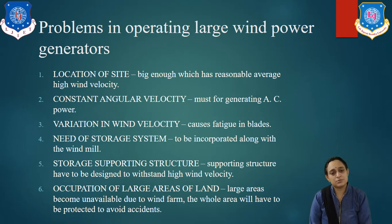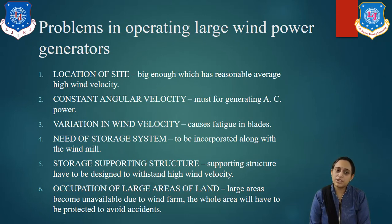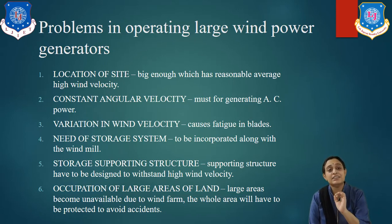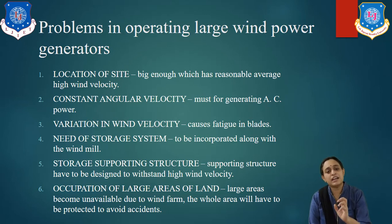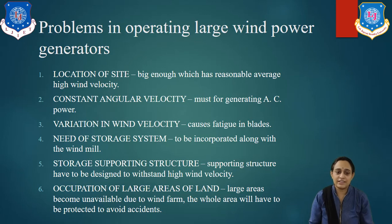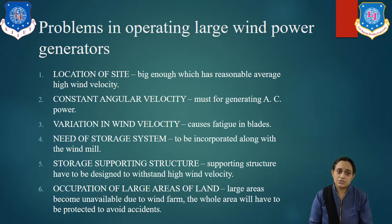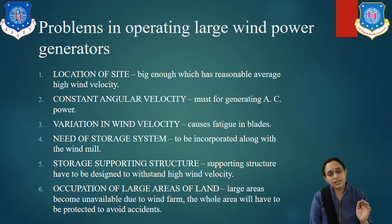Fourth is the need for a storage system — storage must be incorporated along with the windmill. Fifth is the supporting structure, which must be designed to withstand high wind velocity — if the speed exceeds 50 km per hour, it should still generate power. Sixth is occupation of a larger area of land — large areas become unavailable due to the wind farm, and the whole area must be protected to avoid accidents, since it generates electrical power.